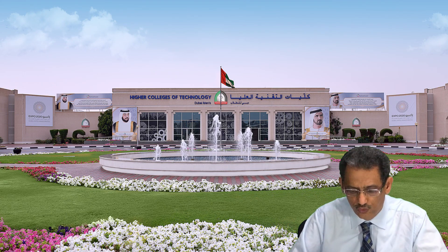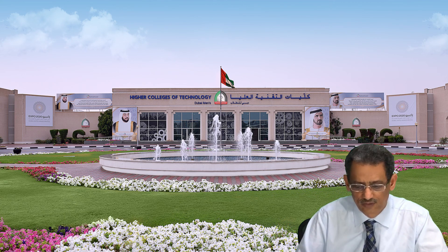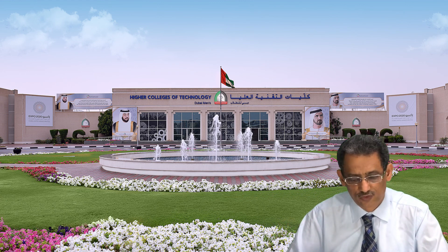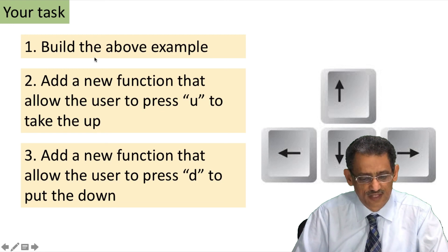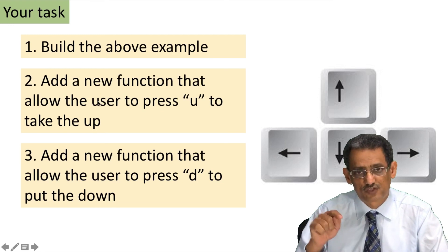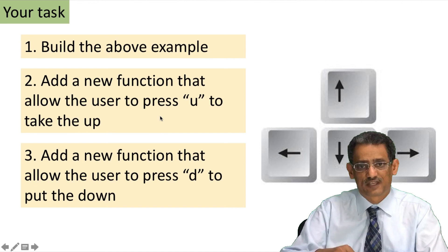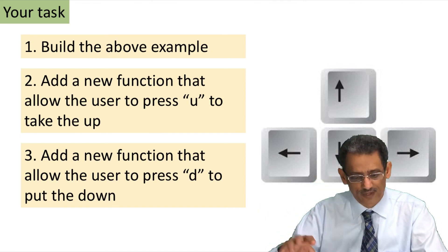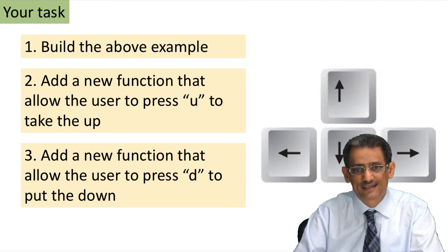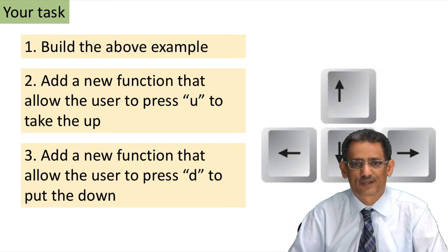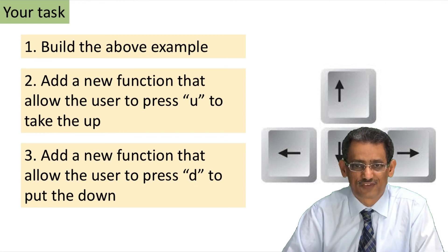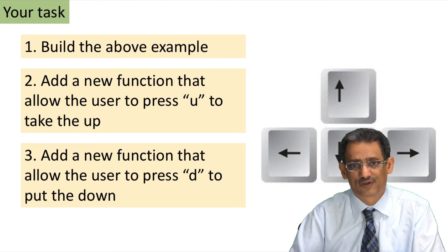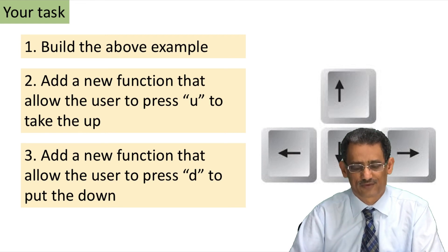Now what you need to do on your own: first, do this example yourself. Then add another function — when the user presses U it will take the pen up so you can move somewhere else without drawing, and when you press D it puts the pen down and you start drawing again. I hope you find this video useful and you will enjoy the journey of creating your own game. Thank you.